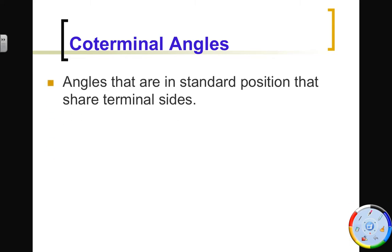And here's what I was just talking about. They share a terminal angle. So these are angles that are in standard position that share terminal sides. So those two angles that I just mentioned back there, positive 60 and negative 300, are coterminal angles. And there are infinitely many coterminal angles to a single angle. So we can just keep adding 360 or subtracting 360 to get back to that angle, to that terminal side.